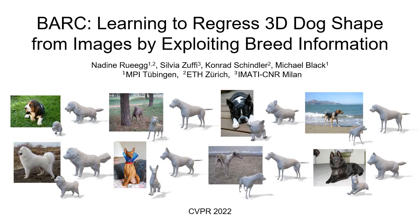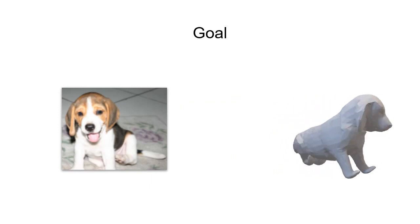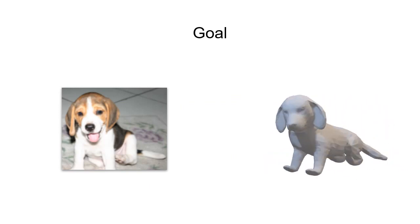We present Bark, learning to regress 3D dog shape from images by exploiting breed information. Our goal is to reconstruct detailed, realistic 3D dogs represented as 3D meshes directly from monocular images.